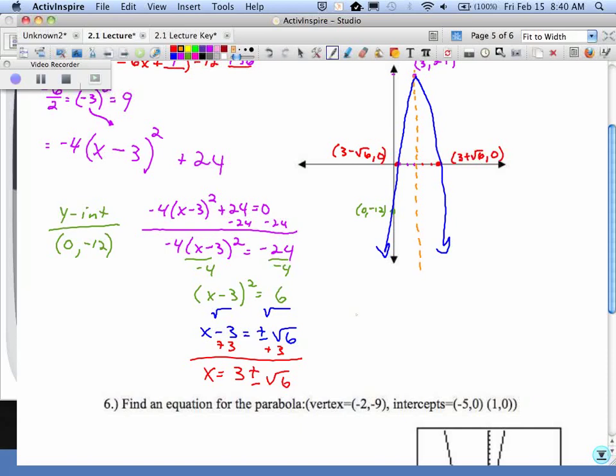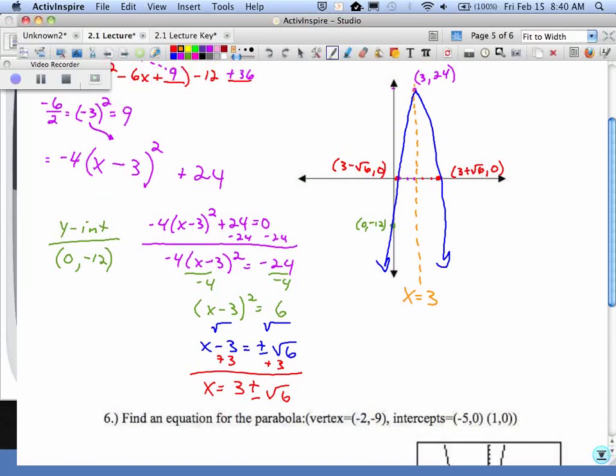That is your axis of symmetry. What is that line? How do you label the line? x equals 3. That vertical line will always go through your vertex, so it's x equals whatever the x is of your vertex.